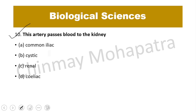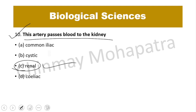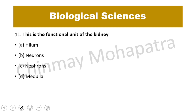Question number 10/12: Which artery passes blood to the kidney? The right answer is the renal artery, which is related to your kidney.